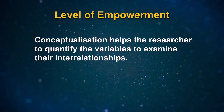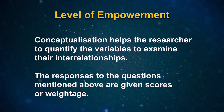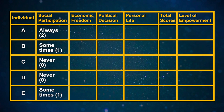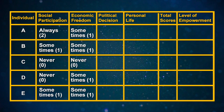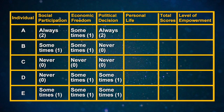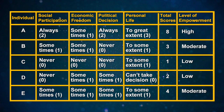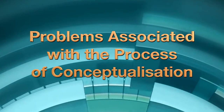Conceptualization helps the researcher to quantify variables and examine their interrelationships. The responses to the questions are given scores or weightages. For example, for five individuals A, B, C, D, and E: social participation — always, sometimes, never, never, sometimes; economic freedom — sometimes, sometimes, never, sometimes, sometimes; political decision — always, never, never, sometimes, sometimes; personal life — to a great extent, to some extent, to some extent, can't take decision, to some extent. The total scores are 8, 3, 1, 2, and 4, and the level of empowerment is high, moderate, low, low, and moderate.